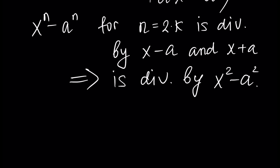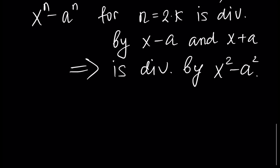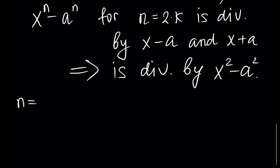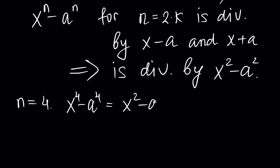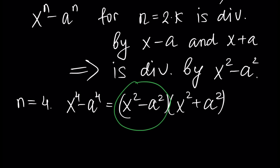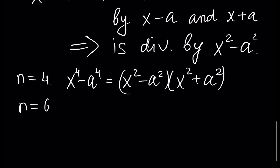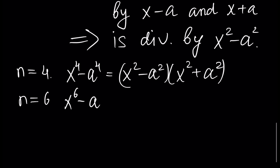So for n equals 4, we have x to the power 4 minus a to the power 4 represented as x squared minus a squared, times x squared plus a squared. Therefore this polynomial is divisible by x squared minus a squared. Similarly, for n equals 6, x to the power 6 minus a to the power 6 is divisible by x squared minus a squared, giving the representation x squared minus a squared times the quotient.